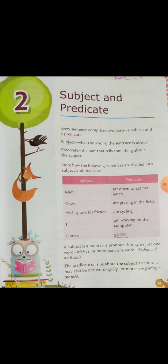'I am working on the computer' — in this sentence we are talking about 'I,' so 'I' is the subject and 'am working on the computer' is the predicate. A subject is a noun or a pronoun; it can be one word or more than one word.